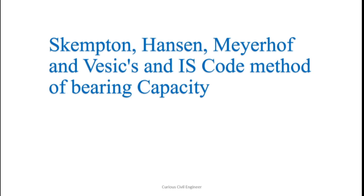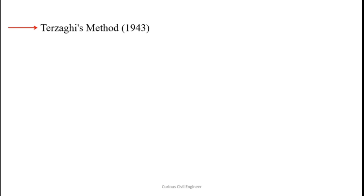In this video, we are going to see Skempton's, Hansen's, Meyerhoff, Vesic, and IS code methods. So far you know that there is one method called Terzaghi's method which is used to determine the bearing capacity of soil. But there are some other methods also. For example, Skempton's method was given after Terzaghi gave his method in 1943 — Skempton gave his method in 1951.